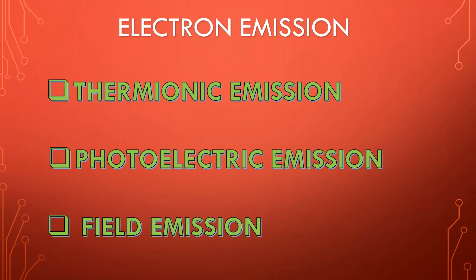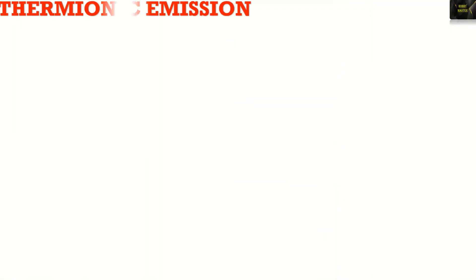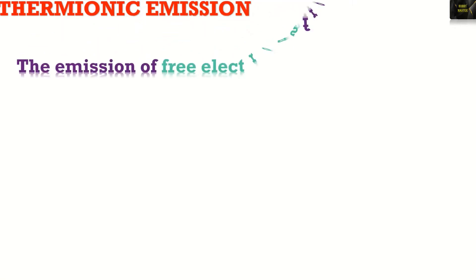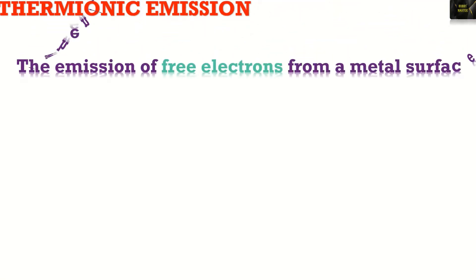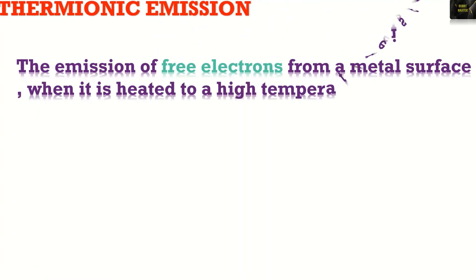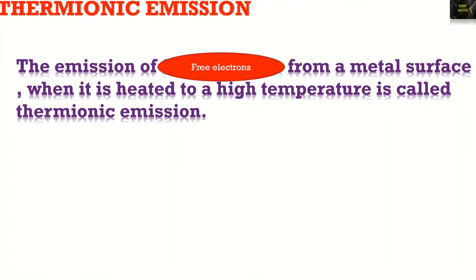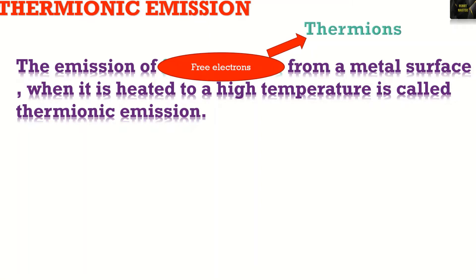In this video we will learn about thermionic emission. Here is the definition: the emission of free electrons from a metal surface when it is heated to high temperature is called thermionic emission. The term 'free electrons' here refers to thermionic emission.